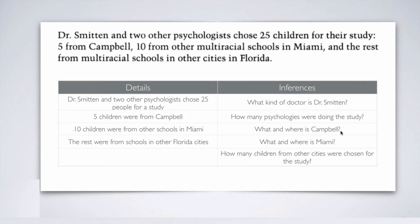What and where is Campbell? We can see that five children were from Campbell and ten were from other multiracial schools in Miami. So we can conclude that Campbell is one of the multiracial schools in Miami — it is a multiracial school located in Miami. Again, this is not written in the text, but it's easy for us to understand. This is an inference.